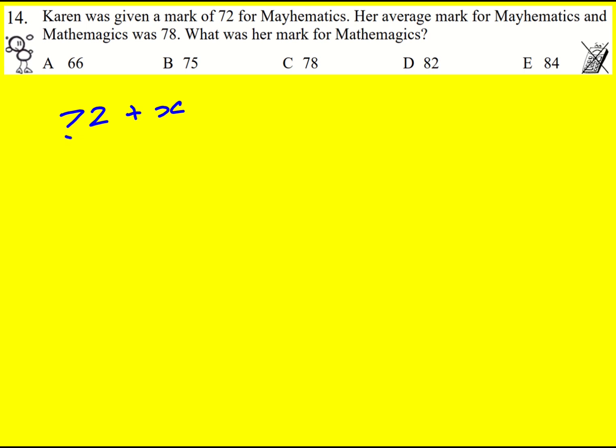Now, if we find the average mark, we just add them together and divide by 2, and that equals 78. So we've created an equation. You don't have to create an equation—you might just take the average mark, multiply it by 2 to get your total mark, and then minus 72. But I'm just explaining it algebraically here.